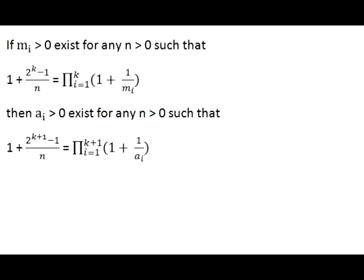That means that we can select this positive integer n so that it will increase the exponent in the power of 2 from k to k plus 1. And at the same time, it will insert one more term on the right side of the equality.